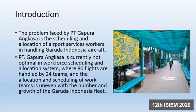The problem faced by PT Kabura Angkasa is the scheduling and allocation of airport service workers in handling the Garuda Indonesia fleet. PT Kabura Angkasa is currently not optimal in its scheduling and allocation system, where 85 flights are handled by 24 teams, and the allocation and scheduling of teams is uneven across MNOPG groups from the Garuda Indonesia fleet.